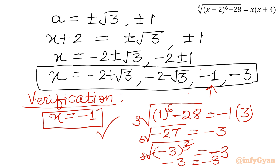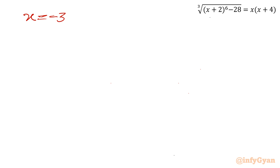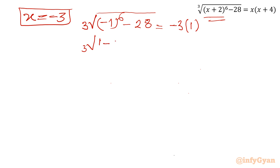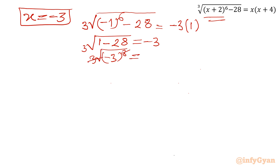Now let us cross check x equal to negative 3. LHS: cube root of (negative 3 plus 2) power 6 minus 28, which is cube root of (minus 1) power 6 minus 28, equals cube root of 1 minus 28, equals cube root of minus 27. RHS is minus 3 times (minus 3 plus 4) equals minus 3 times 1 equals minus 3. Cube root of minus 27 equals minus 3. Minus 3 equals minus 3. True and verified solution.